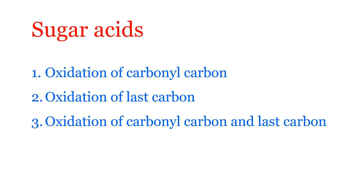How do we get sugar acids? Monosaccharides upon oxidation yield sugar acids. This oxidation involves oxidation of the carbonyl carbon, oxidation of the last carbon — that is the primary alcoholic group — or else oxidation of both the carbonyl carbon as well as the last carbon. We get different types of acids based upon which carbon atom is oxidized.